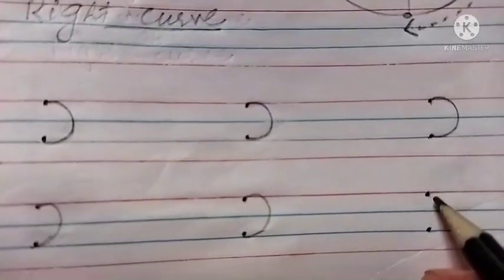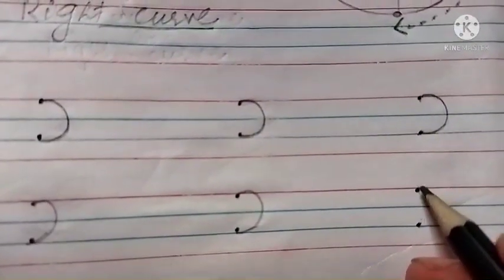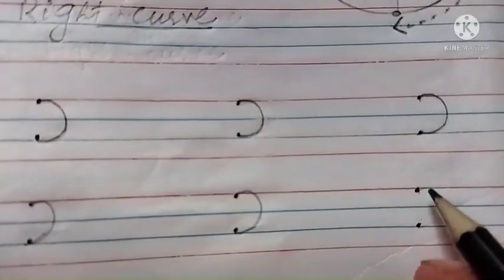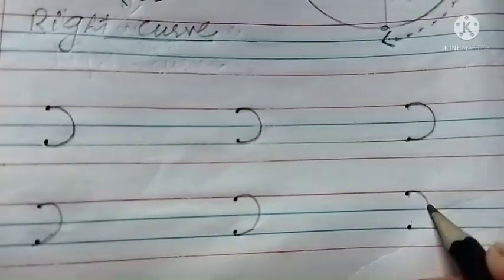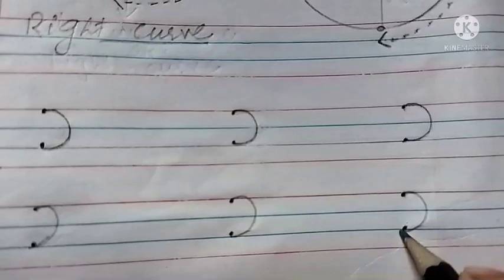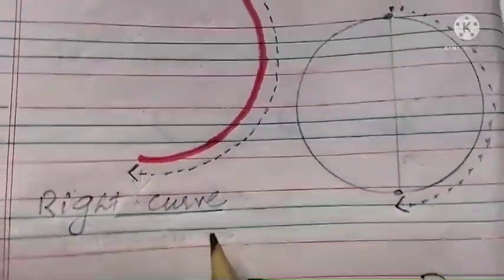Now I will show you one dot red side and the other dot blue. Then I will show you one dot like this. Okay, so now we have learned the right curve.